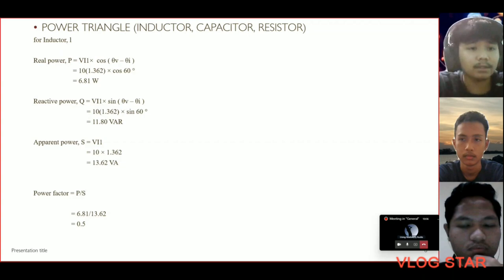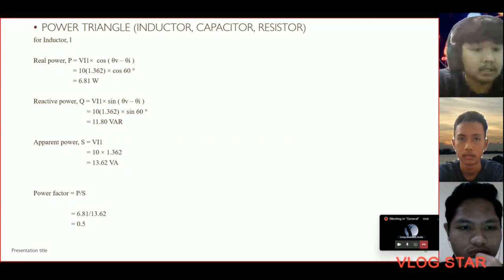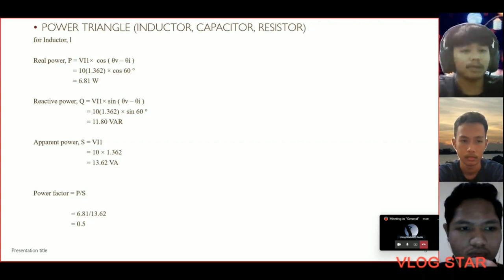And then for apparent power S, we use V multiplied by I. So the power factor, we use the formula P divided by S. The final answer is in the result.